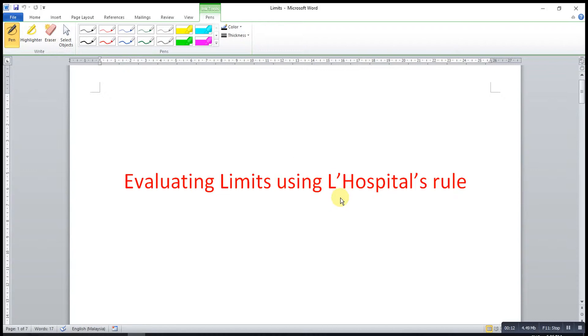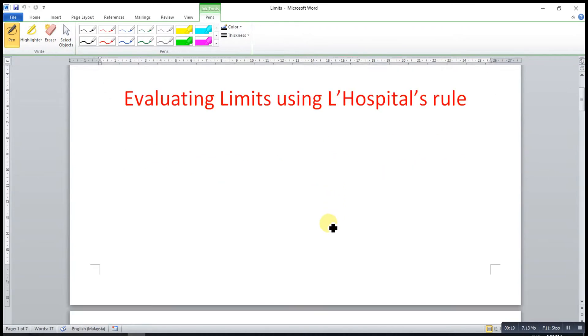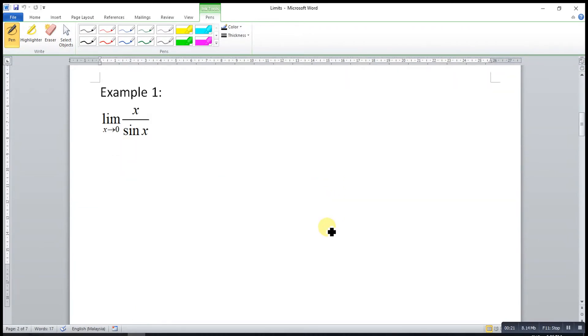Sometimes, we might not be able to evaluate a limit using factorization or conjugate. For example, this. So for this case, we can think of the L'Hospital rule.